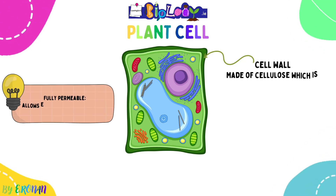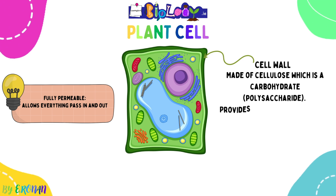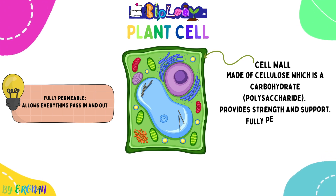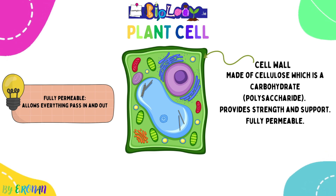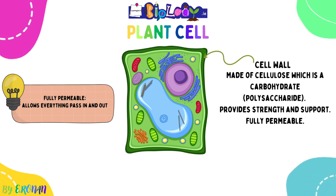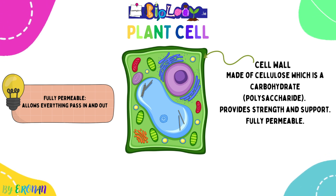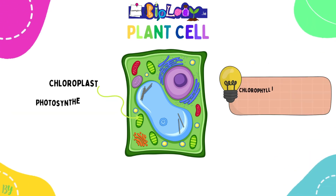The cell wall is made of the polysaccharide cellulose, which is a carbohydrate. It provides strength and support to the plant, as plants don't have muscles or bones. It is fully permeable, meaning it allows everything to pass in and out. Remember, the cell membrane is selectively or semi-permeable and only allows certain substances to pass in and out — that is the key difference between the cell wall and the cell membrane. The cell wall is found in plants, not in animals.